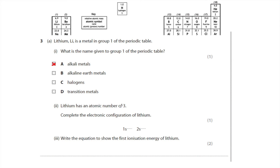Lithium has an atomic number of three. Complete the electronic configuration of lithium. Electrons fill up shells: the first shell (1s) holds two electrons, then you fill the 2s shell. With only three electrons total, the configuration is 1s² 2s¹ — two electrons in the first shell and one in the second.